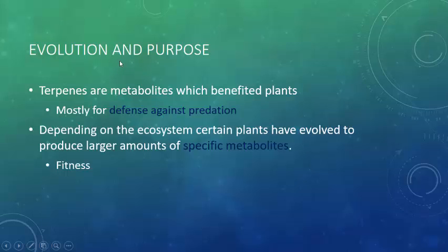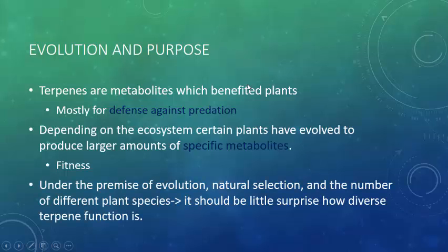Depending on the ecosystem, certain plants basically evolved to produce larger amounts of specific metabolites. If it increased the plant's fitness amongst the population over time, then it's going to be selected for by evolution. Given that there have been many plants in many environments over the years, and that evolution usually adds onto DNA and doesn't necessarily delete it — especially for plants and secondary metabolites — the number of different plant species means we shouldn't be surprised how diverse terpene function is, because plants have been coexisting with animals for many millions of years.